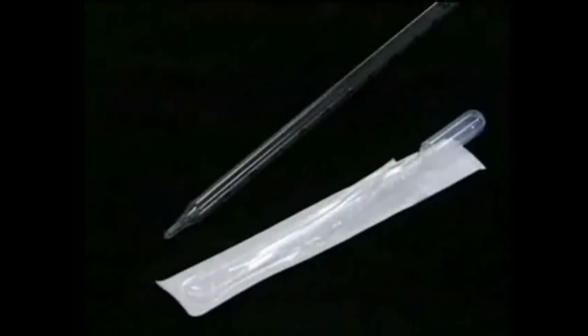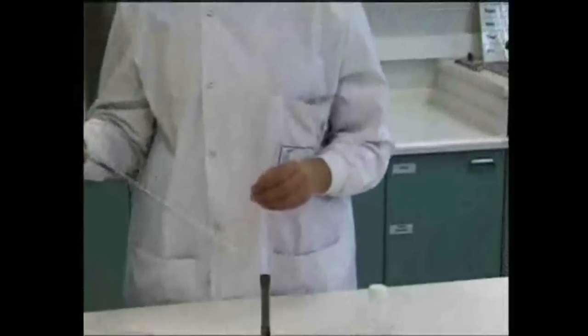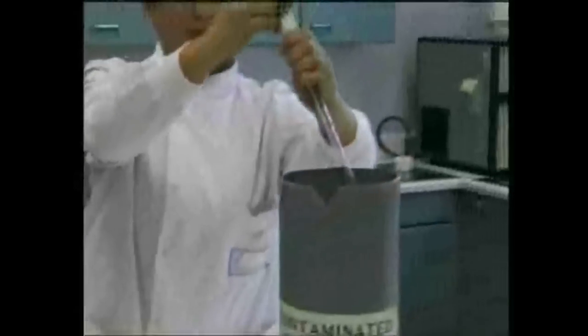Pipettes are supplied sterile, either individually wrapped or packed into a container, whose top should be flamed on opening. Pipettes are flamed by flashing through the Bunsen flame in one continuous movement, and are discarded into disinfectant after use.